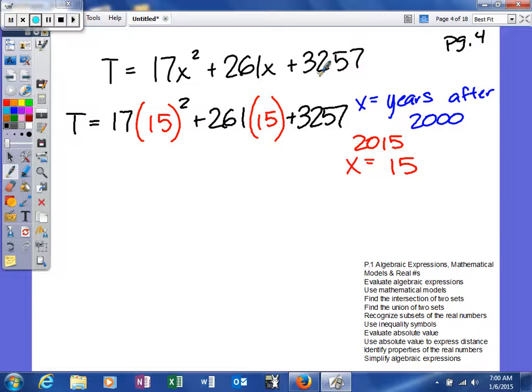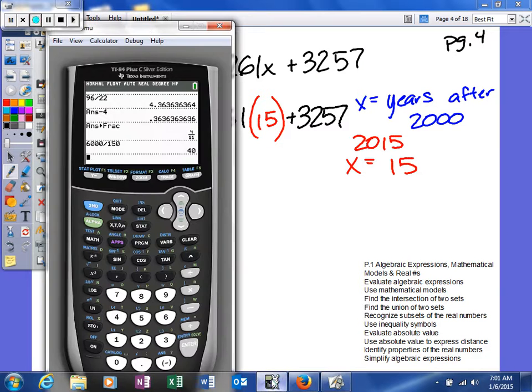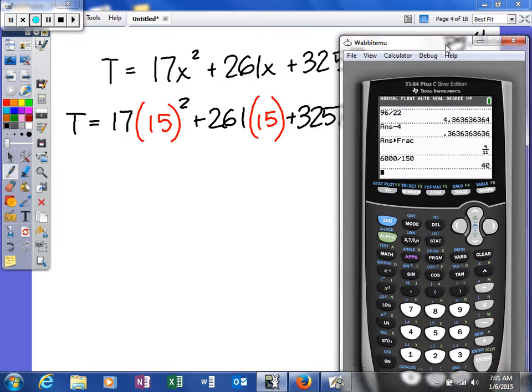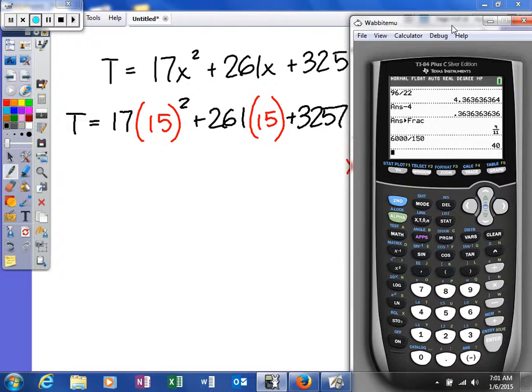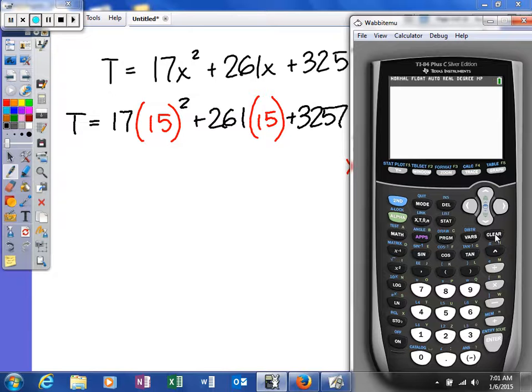I have a trusty little calculator here, so we're going to use that. It's basically like an expression because I'm not solving for x - it's already solved for T, so I don't have to manipulate my equation. So I'll say 15 squared, get that answer, multiply that by 17.